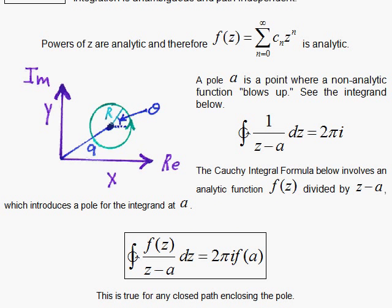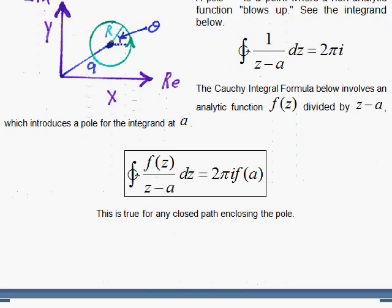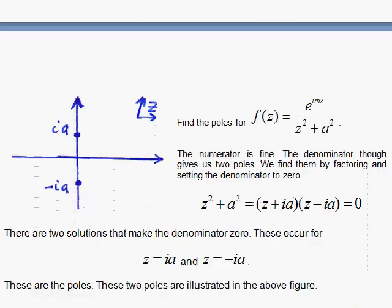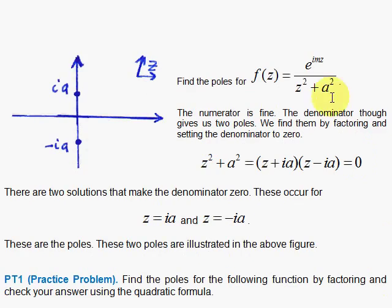And here we're going to find some poles for practice. Let's consider this function here. This function looks good in the numerator, e to the imz, no problems there. But the denominator can be 0, it will be 0 for two values of z. We simply set z squared plus a squared to be 0.